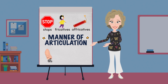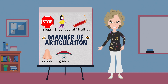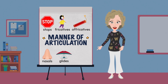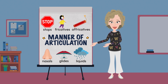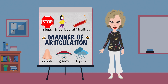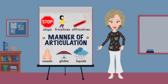Nasals, where the air is pushed through the nose. Glides, which have very little obstruction of air so the sound is almost like a vowel. And liquids, where the sound is made with very little air, which again creates a vowel-like sound.